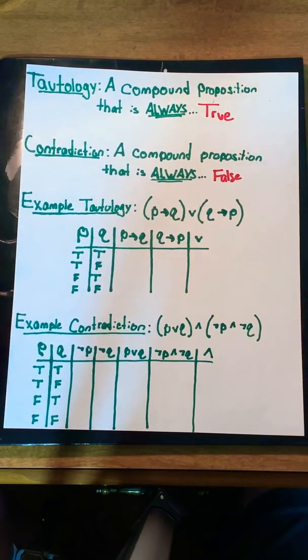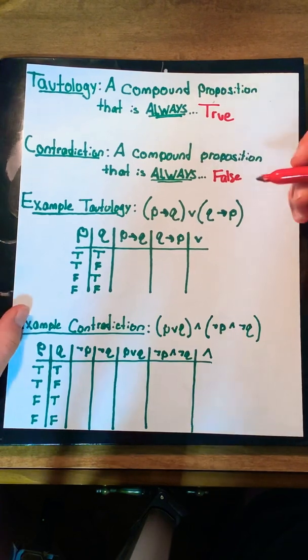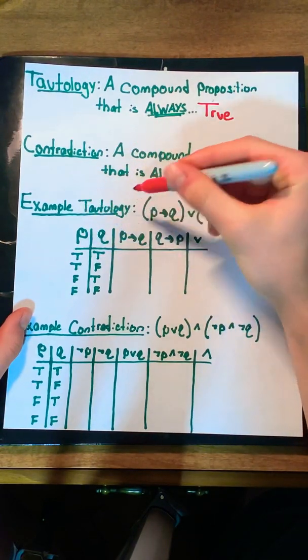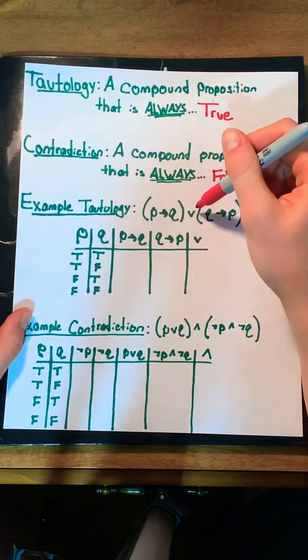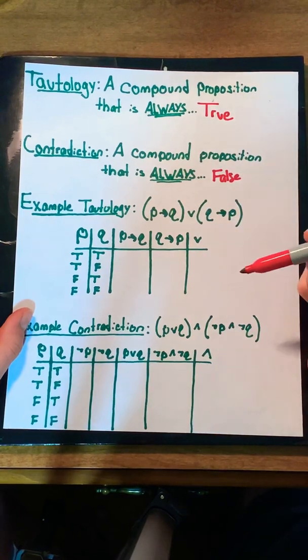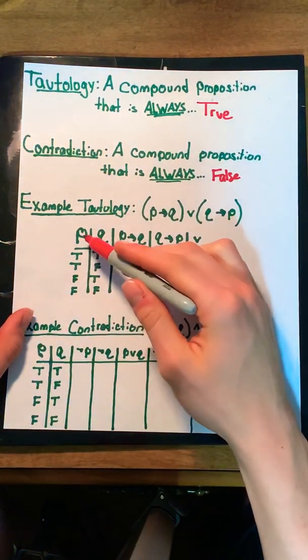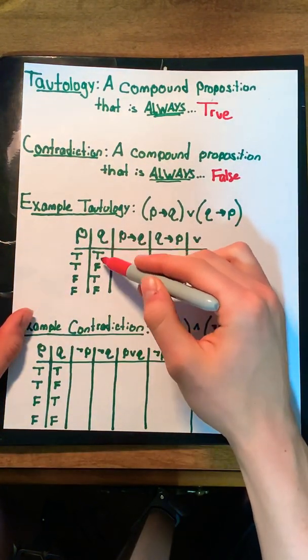These seem like pretty easy definitions, but it really helps to see them in action. Let's take the example tautology, if p then q, or if q then p. I set up my truth table, giving p true true false false and q true false true false.